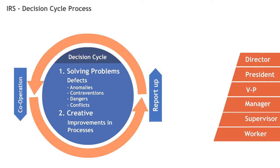The lines and arrows between the levels show the more interactive and dynamic view of the IRS, where problems move through the organization, where information flows up and down and side to side. Let us see how this works.